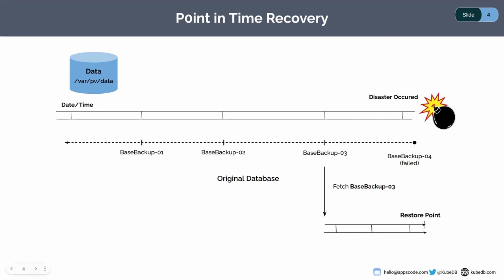Now if we have continuous archiving, then we're actually putting all our WAL files after this base backup into some storage. So if we have this disaster scenario happen, then we can actually recover till that point. That's where point-in-time recovery comes in handy for us.